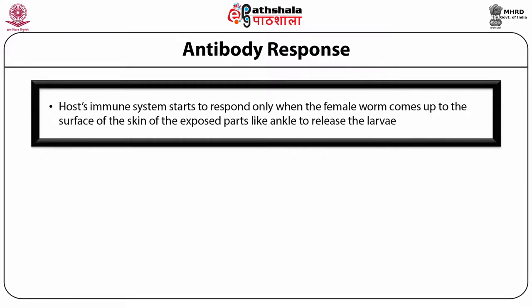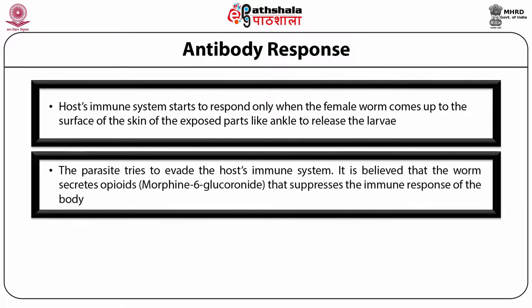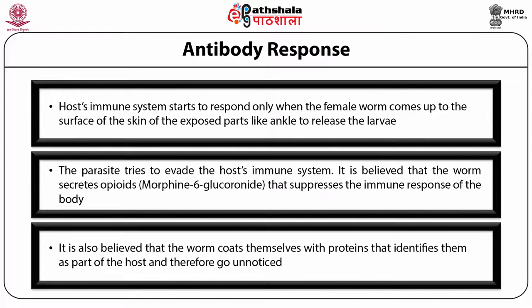The host immune system only starts to respond when the female worm comes to the surface of the skin to release larvae. The parasite tries to evade the host immune system. It is believed that the worm secretes opioids — morphine-6-glucuronide — that suppresses the immune response. It is also believed that the worm coats itself with host proteins so it goes unnoticed by the immune system.